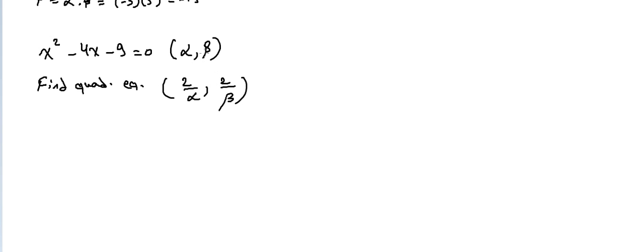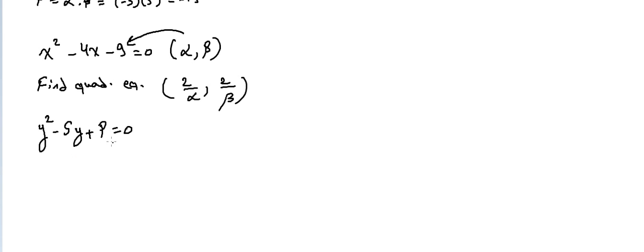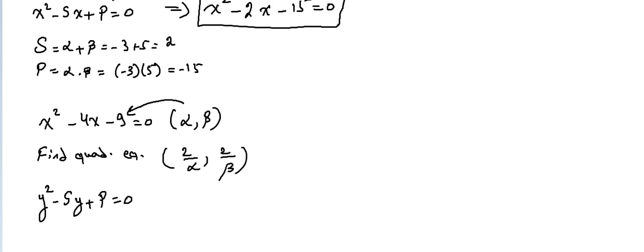Alpha and beta represent the roots of the original equation. To differentiate between this equation and the new one, I will write the new equation in the form y squared minus s times y plus p equals zero.